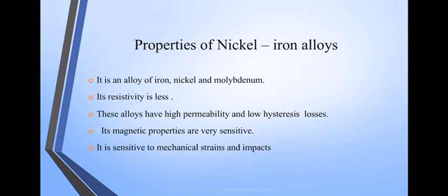Properties of nickel-iron alloy: this nickel-iron alloy is an alloy of iron, nickel and molybdenum. It has less resistivity. This alloy has high permeability and low hysteresis loss. Its magnetic properties are very sensitive to mechanical strain and impacts. These are the different alloys of iron.